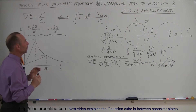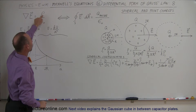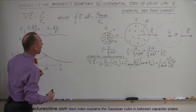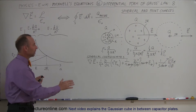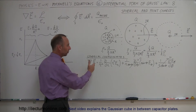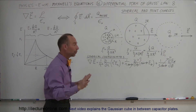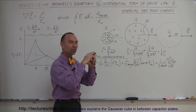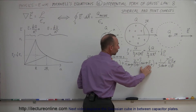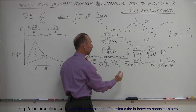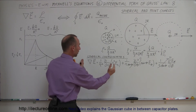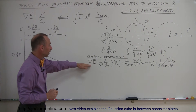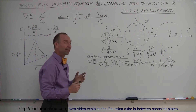So what charge density do we use in each case, and how does that affect the differential form of Gauss's law? We're going to take the divergence. Since we're dealing with spherical coordinates, we can eliminate the angular terms because the charge is distributed spherically and evenly — there's no variation in theta or phi. We only need to worry about the radial coordinate.